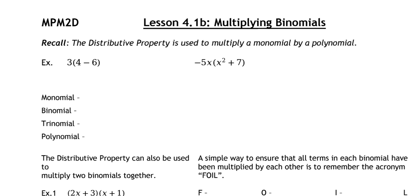We're going to use the distributive property to take the number three and hit every single term inside the bracket — so it's three times four minus six. We take three, multiply by four, then multiply by six: three times four is twelve, minus three times six is eighteen, giving us twelve minus eighteen, which is negative six.